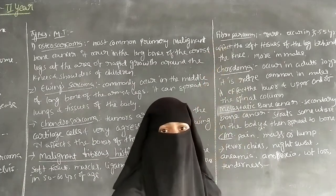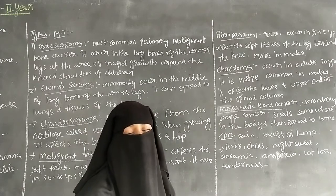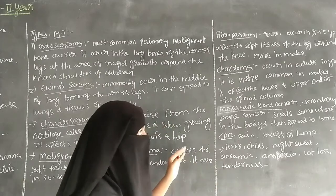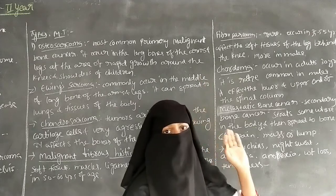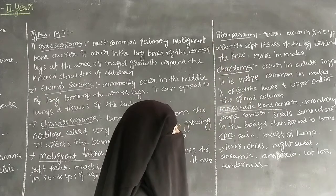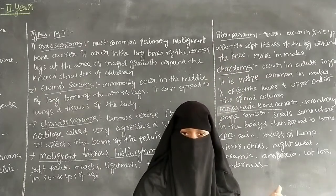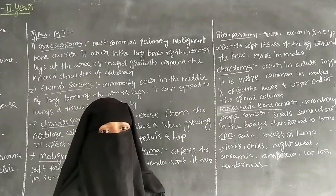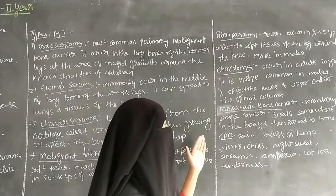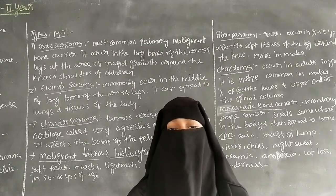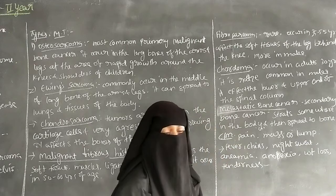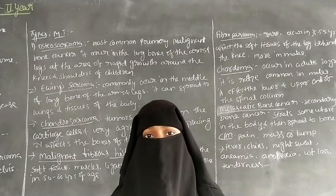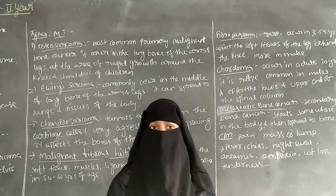The next type is fibrosarcoma, which is a rare condition. It occurs in the age group of 35 to 55 years and mostly affects the soft tissues of the leg behind the knee. It is more common in men compared to females.